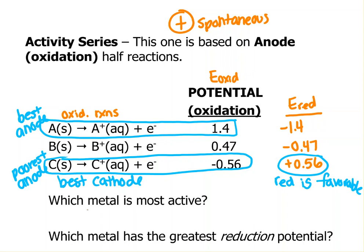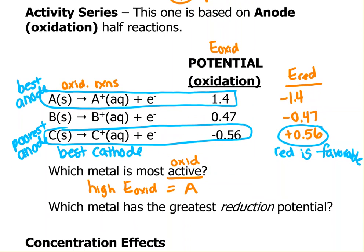So let's answer these questions. Which metal is most active? Remember, when we talk about metals being active, what metals tend to do, in general, is be oxidized. They're the ones that are oxidized. So we want to have the one with the high oxidation potential. And that would be A. Which has the greatest reduction potential. And we already figured that out. It is C. So there's opposites there.